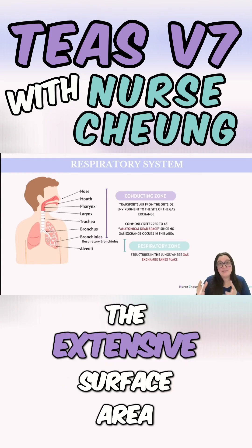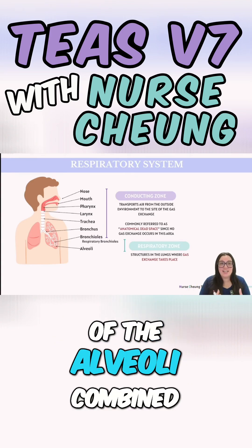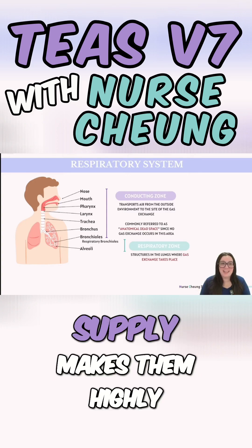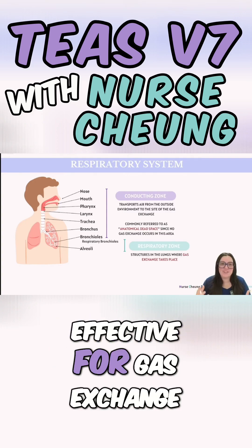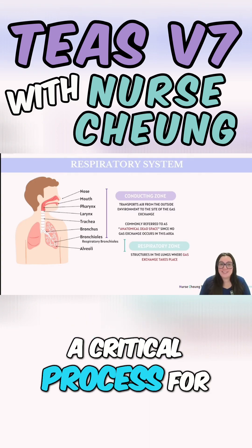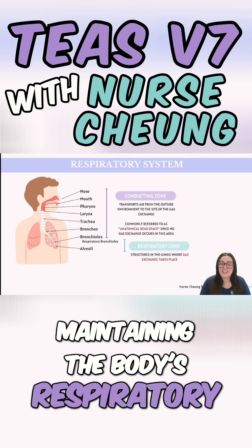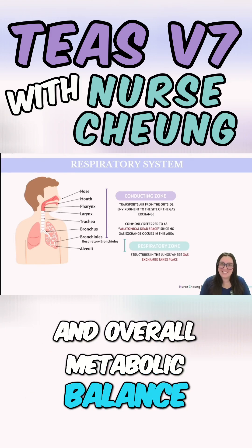The extensive surface area of the alveoli, combined with their rich blood supply, makes them highly effective for gas exchange — a critical process for maintaining the body's respiratory and overall metabolic balance.